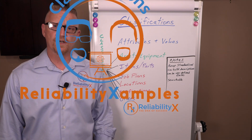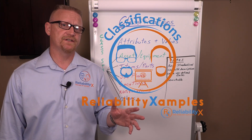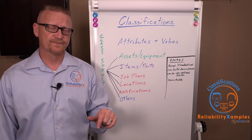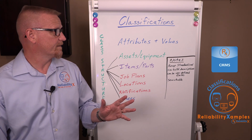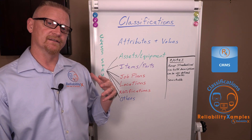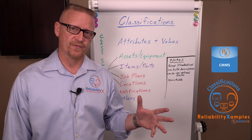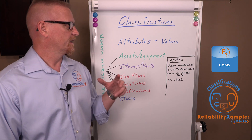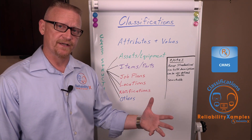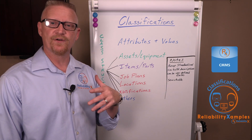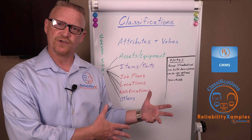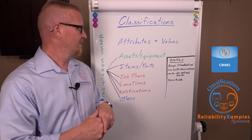Today we're going to talk about classifications inside your CMMS or EAM. A classification is a list of attributes that can be applied to another record inside your CMMS for you to populate values associated with those attributes.